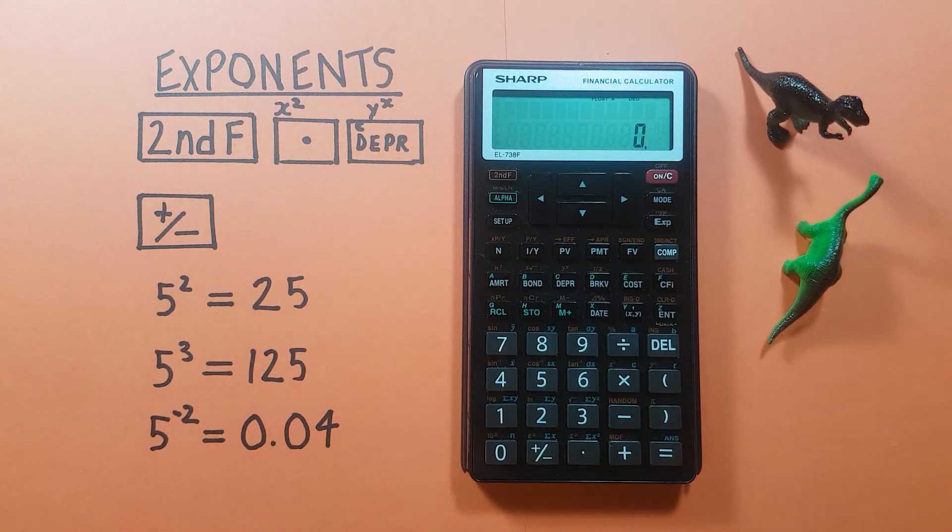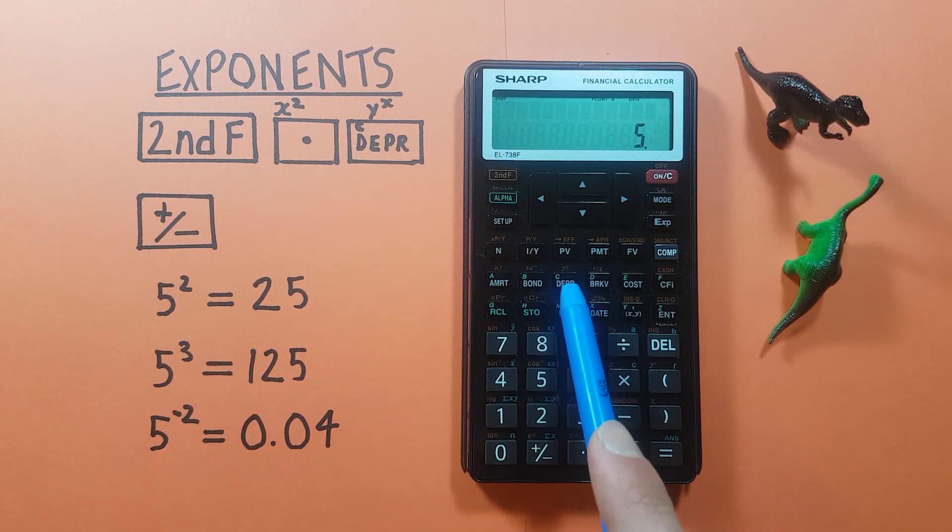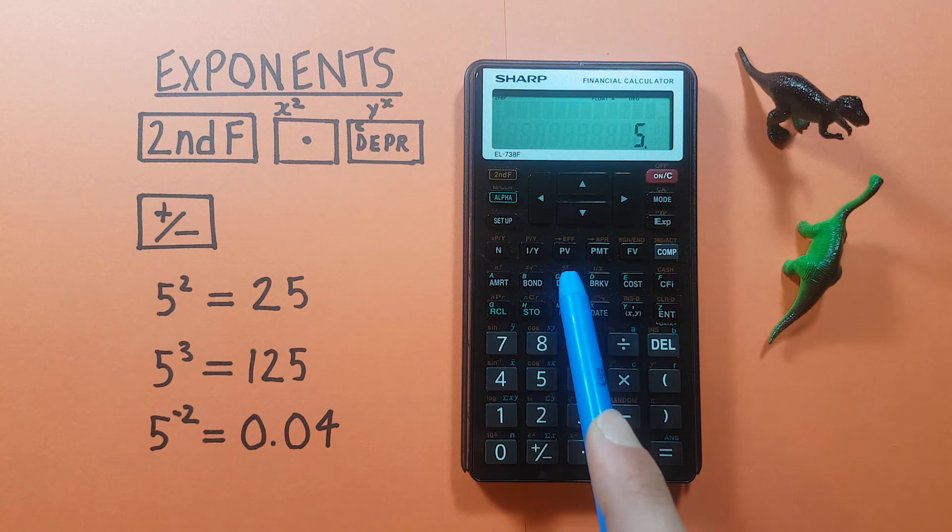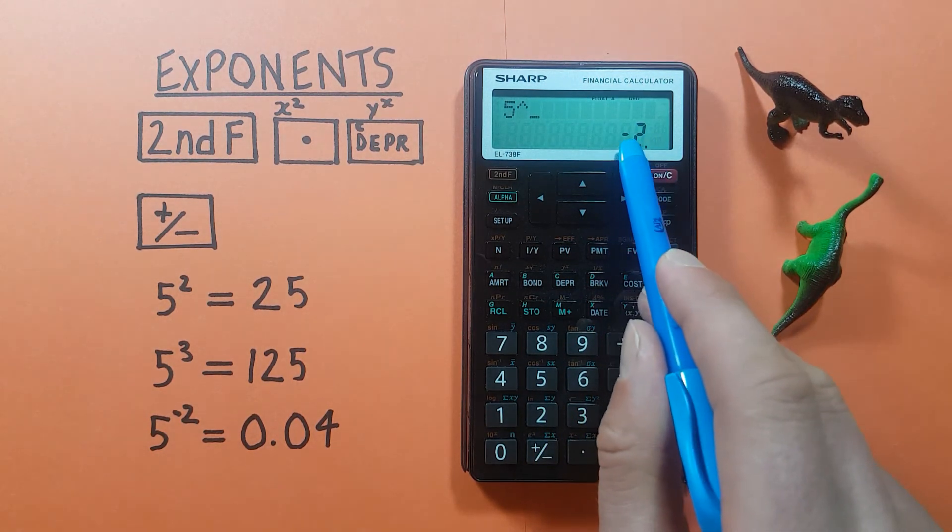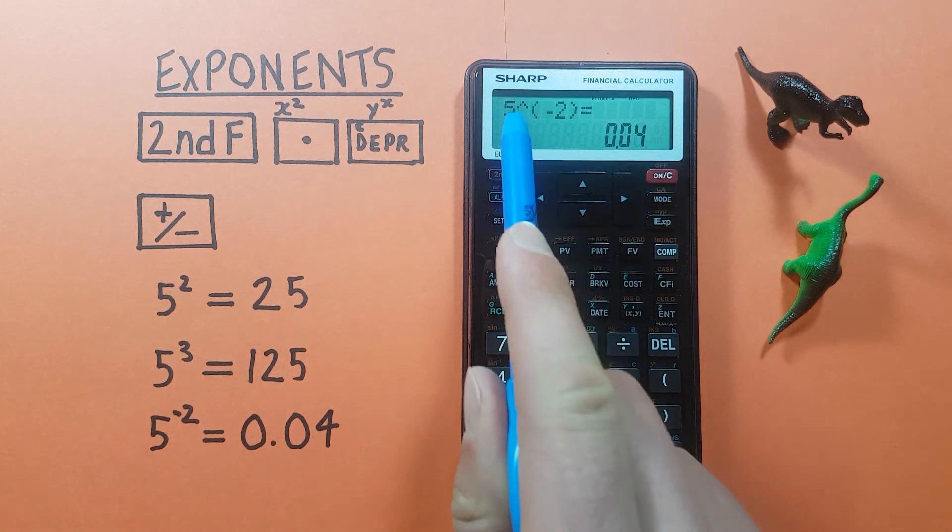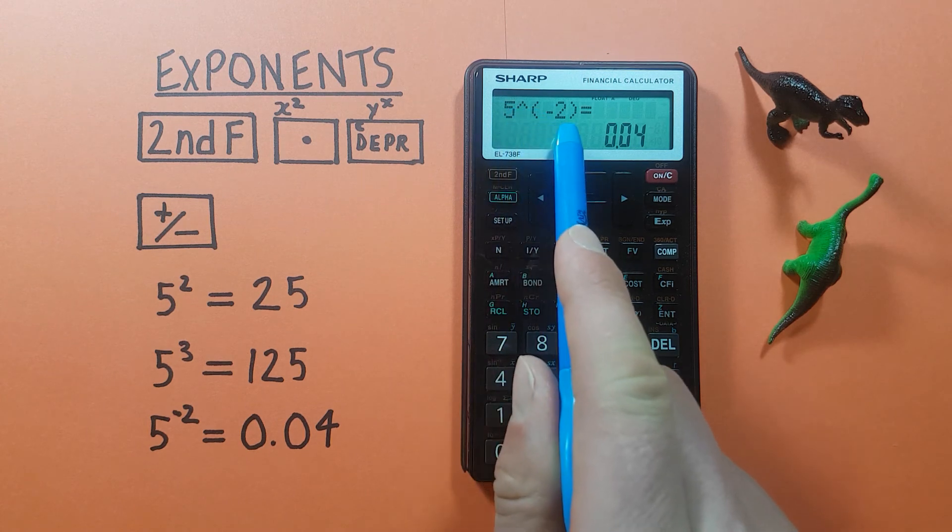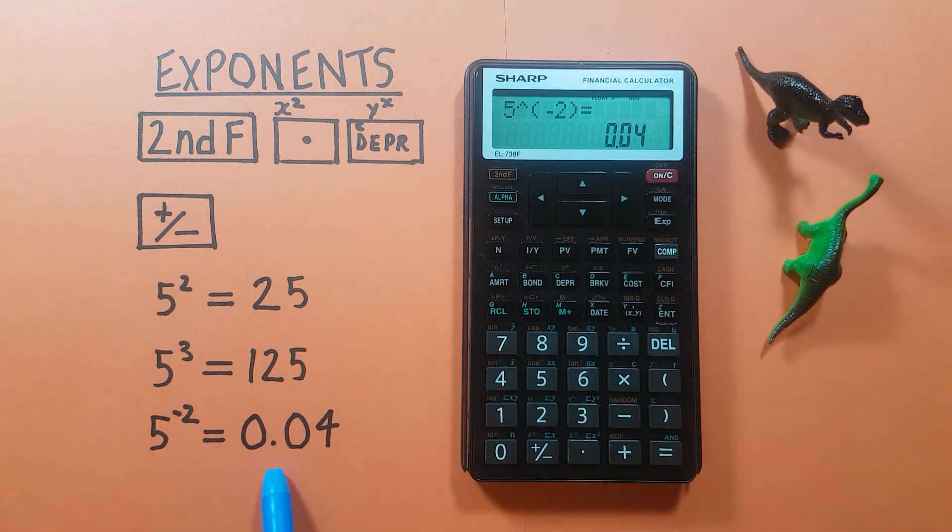We can also use this to solve for negative exponents like for example 5 to the power of negative 2. Again we place 5 on the screen and then second DEPR, remember that has the second function of y to the power of x, there we go there's our caret, and then we put the exponent in, the 2, and before we hit equals we hit the positive negative key so we see that 2 has become negative, and then press equals and we see we get 5 to the power of negative 2 in brackets is equal to 0.04 which is correct.